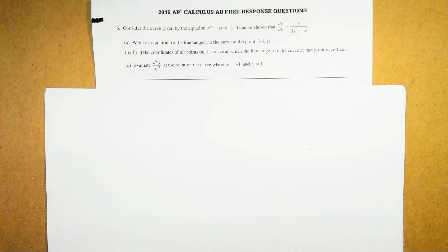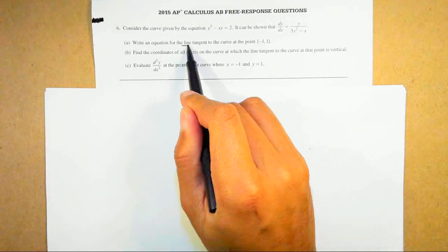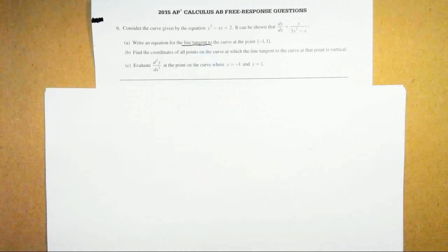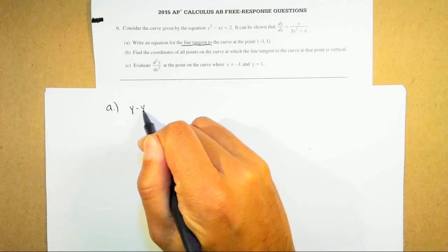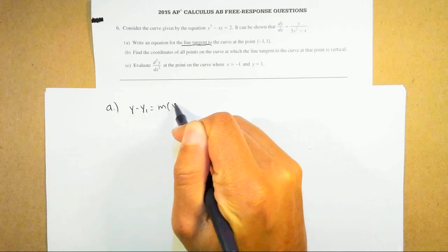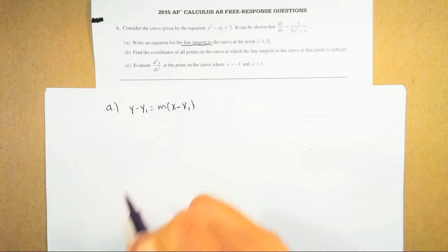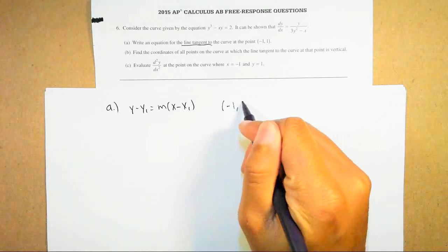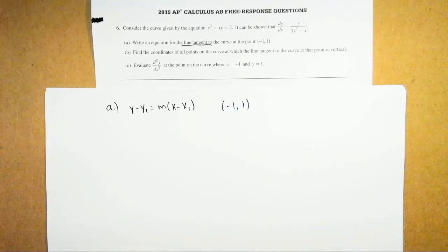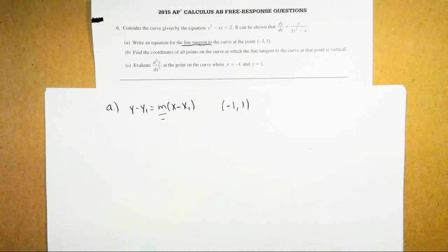Part A says: write an equation for the line tangent to the curve at the point negative 1 comma 1. Key word: line tangent. When I see that, I know that all I have to do is y minus y1 equals m times (x minus x1), where y1 and x1 are the coordinates negative 1 comma 1. The only thing we're missing is the slope, m. We find m from the derivative, and the derivative is given to us.